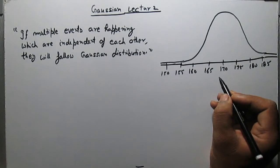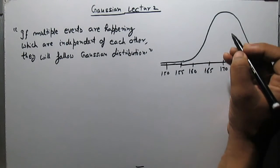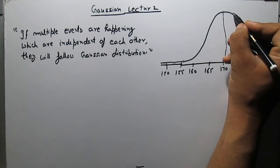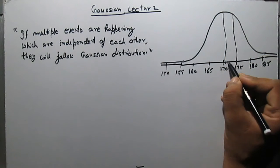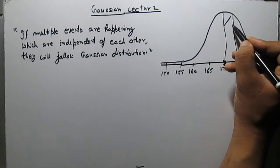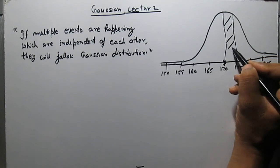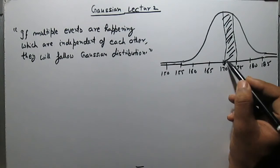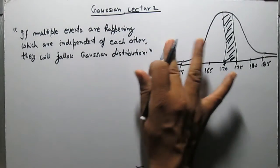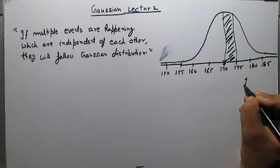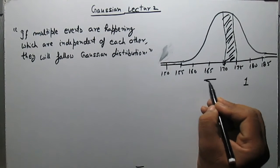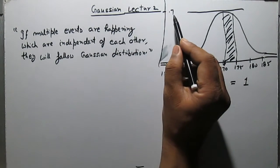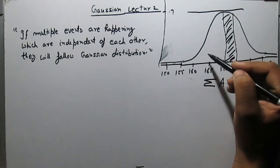Suppose we want to know the probability that a student's height is falling in this range 172 to 175. This probability will be given by the area under the curve in this range. The total area of this curve must add to 1. The height of this curve is such that the area remains 1.